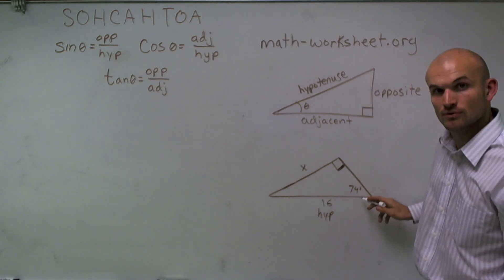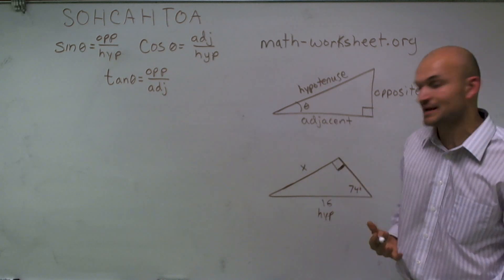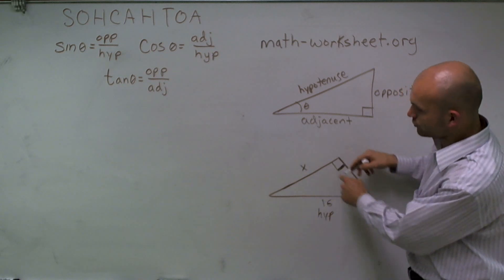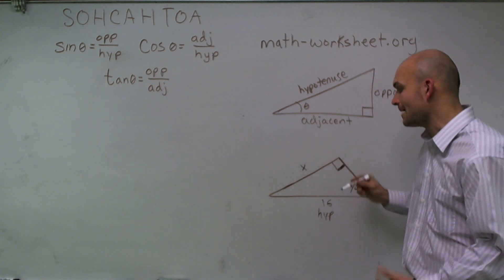They give me an angle, which is theta. And the side length that is directly across from my angle is called my opposite.